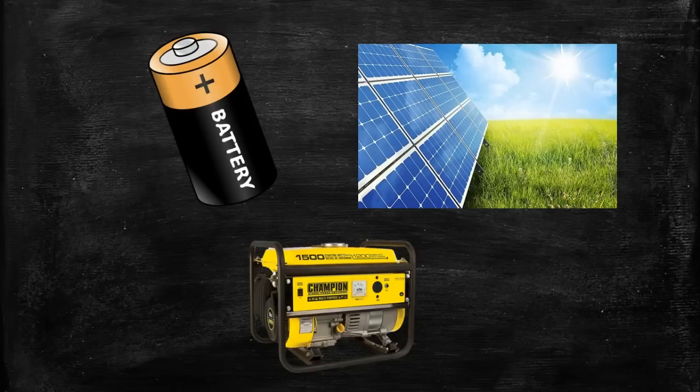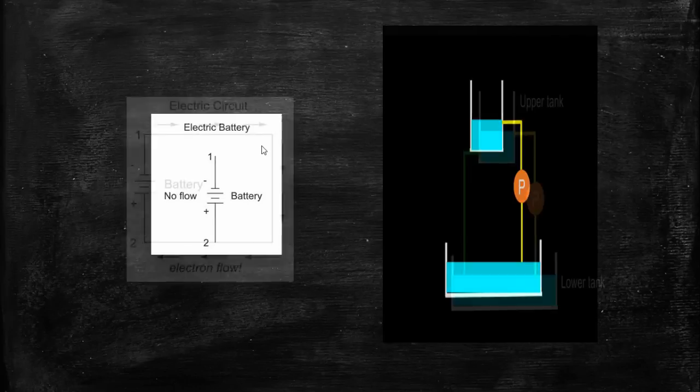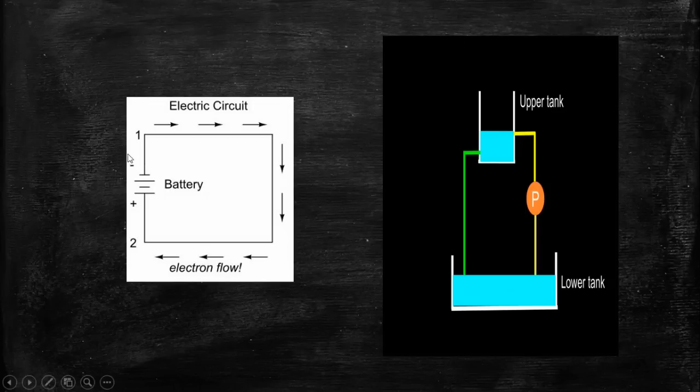To understand current, we will see: first we have a battery that means we have a force but the electrons are not flowing. Similarly, we have pumped the water from the lower tank to the upper tank but the water is not flowing in the downward direction. Why? Yes correct, because we don't have a path for it.